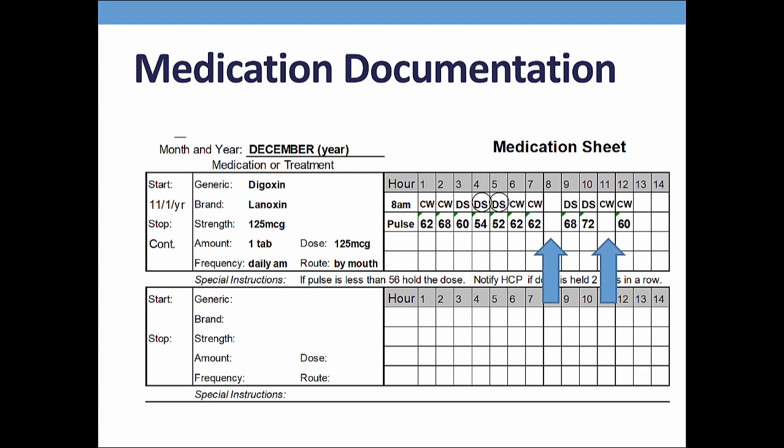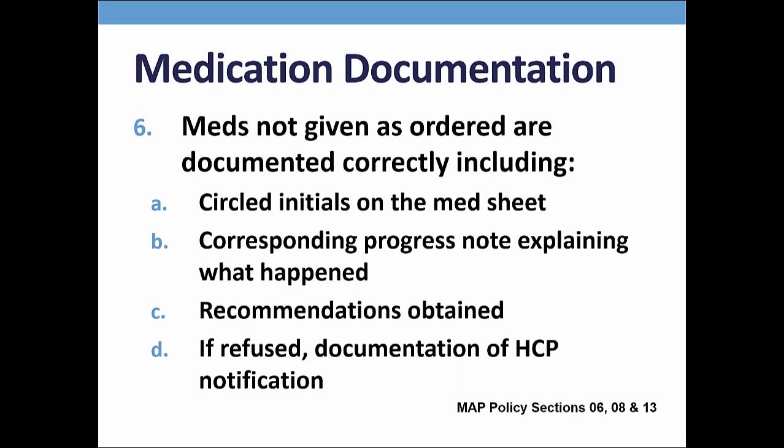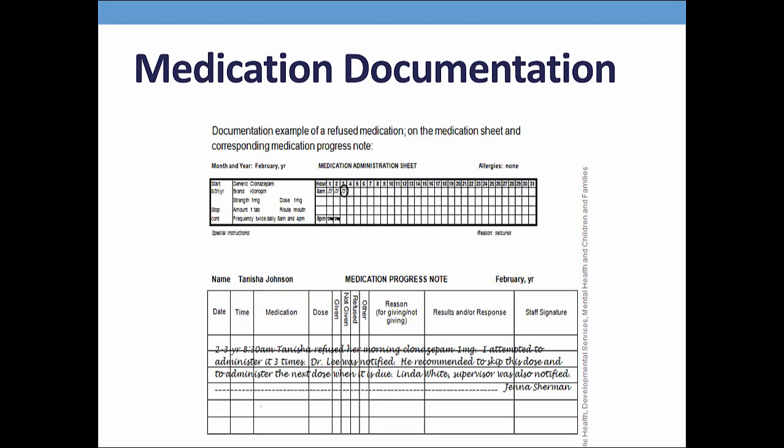You want to encourage all staff initialing a medsheet who notice a blank space to contact you. If it is determined that the med was not given, this is a medication occurrence and a MAP consultant must be notified immediately. If a med is refused, I expect to see circled initials on the front of the medsheet and a corresponding progress note indicating what med was refused, that the HCP was notified, what the HCP recommendation was, and that a supervisor was also notified. On your screen is a documentation example of a refused medication with the corresponding progress note.